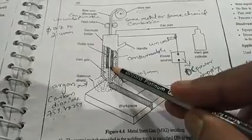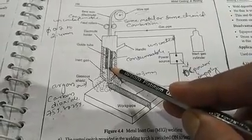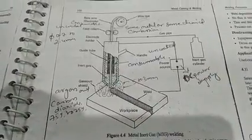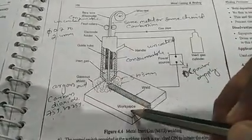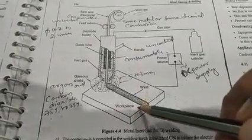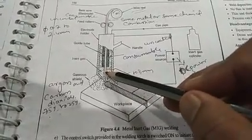So since it is a consumable electrode, it is a consumable electrode of the same material of the workpiece which is to be melted.